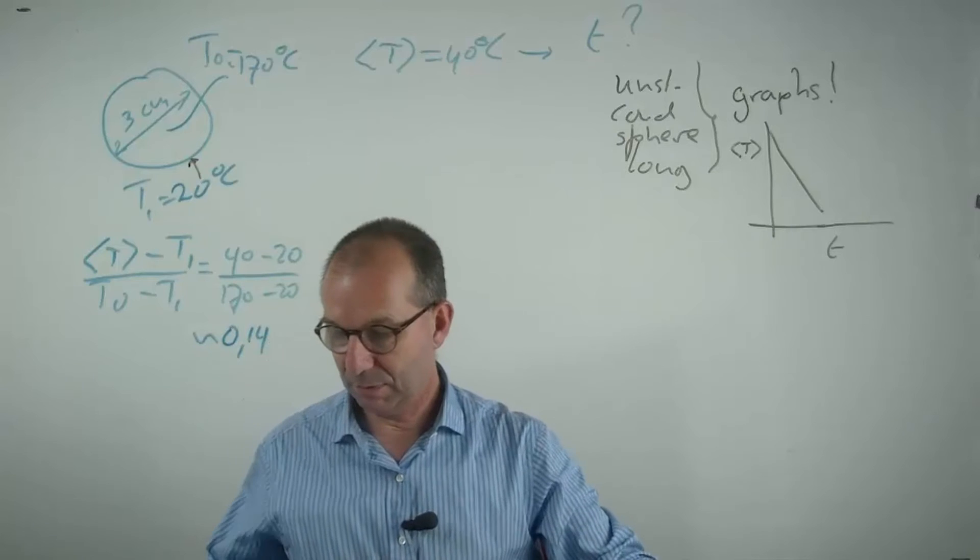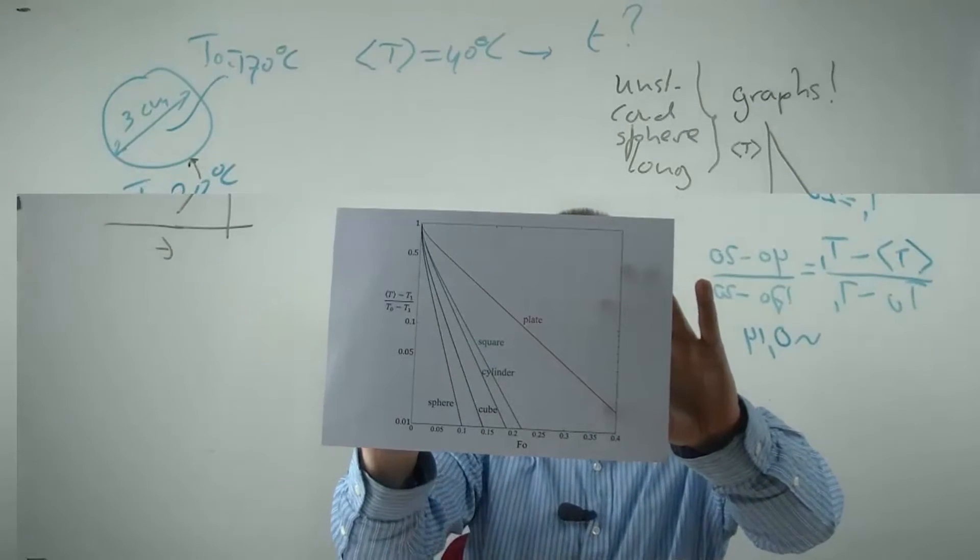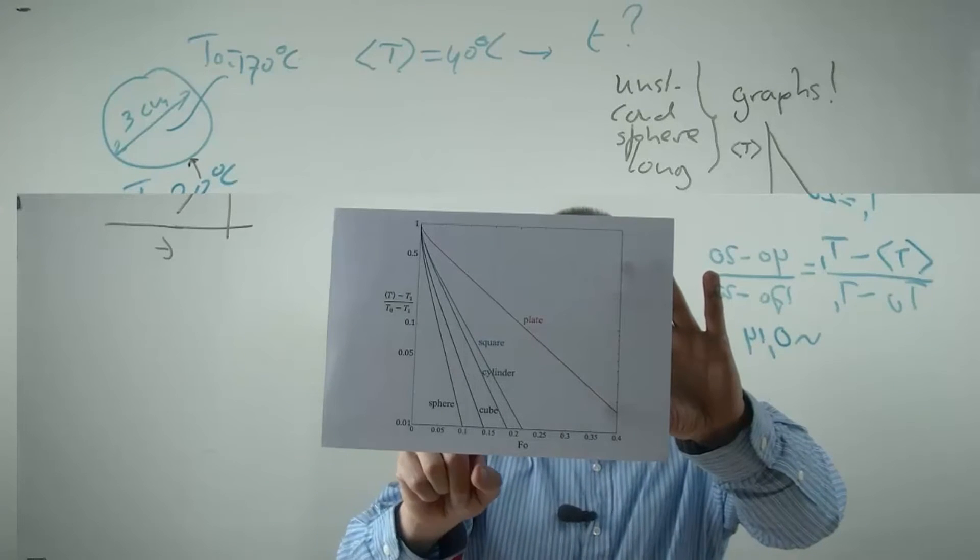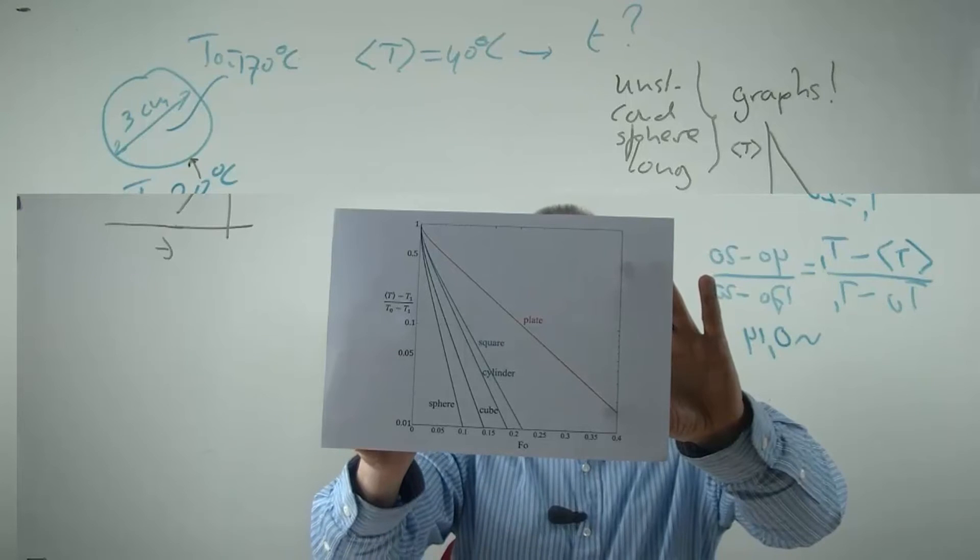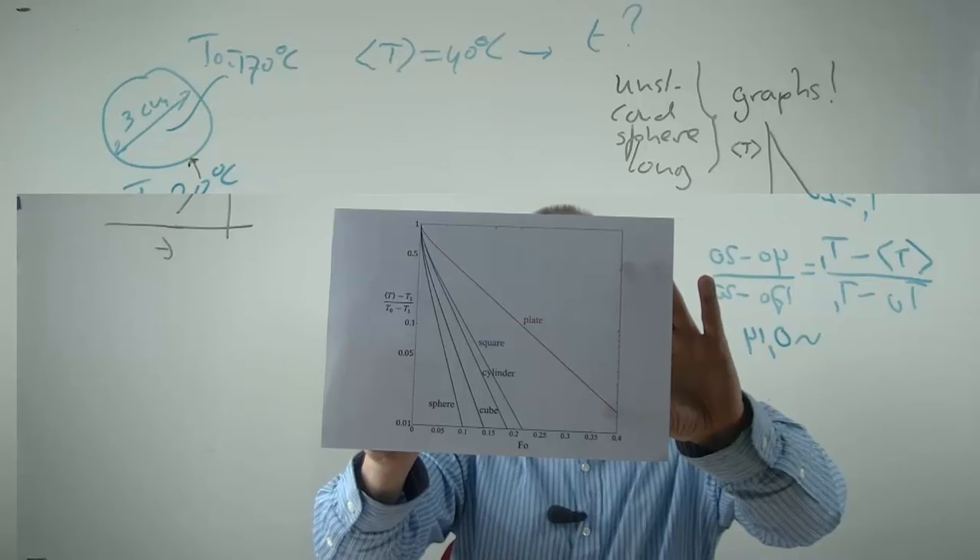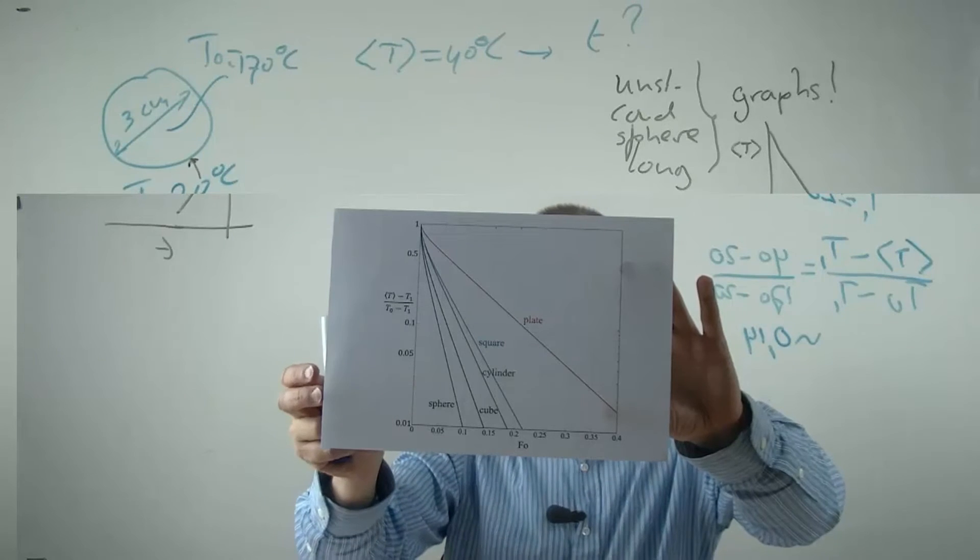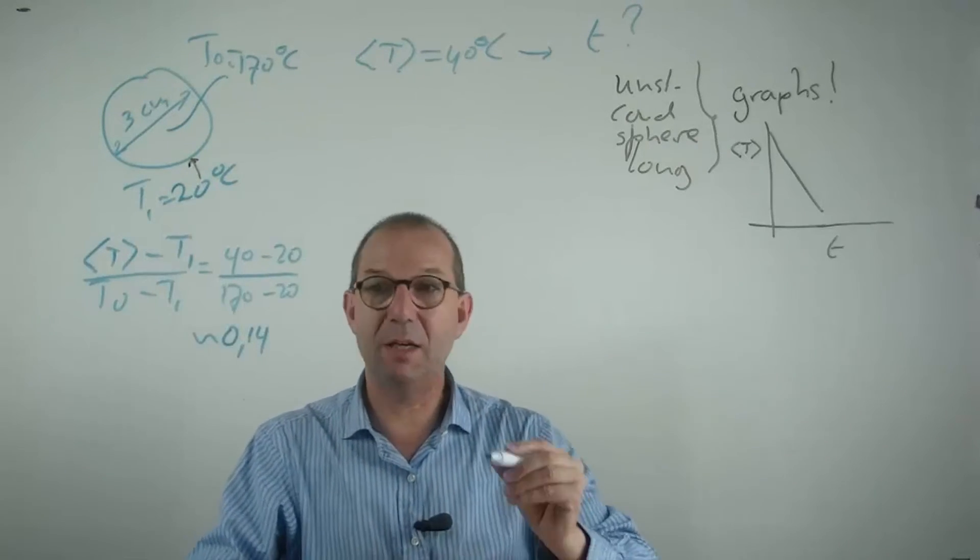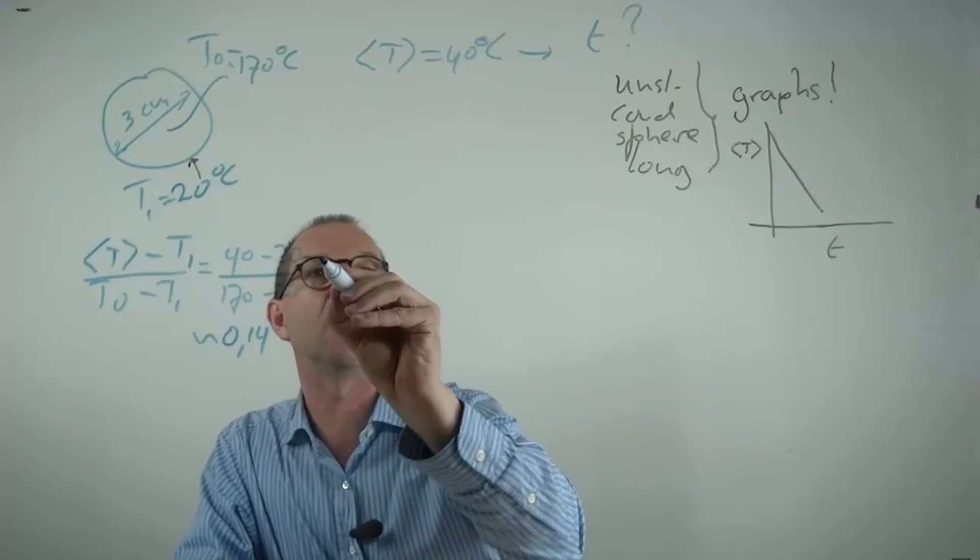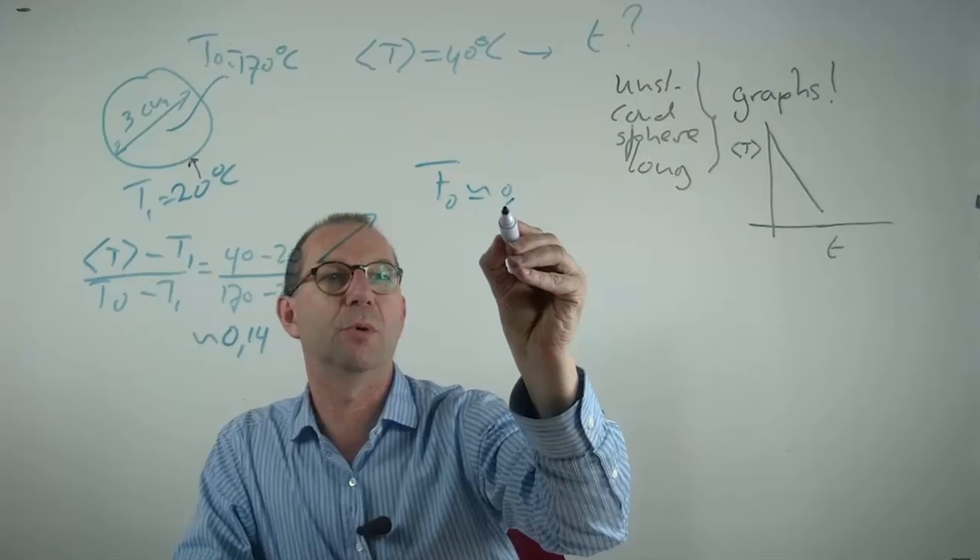Once we have that, we need the graph that shows the average temperature versus dimensionless time. So we read off at a value of 0.14 for this dimensionless temperature what is the dimensionless time. If we do that, we get a Fourier number from the graph of about 0.03.